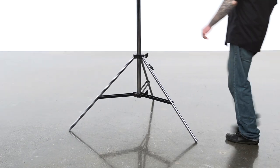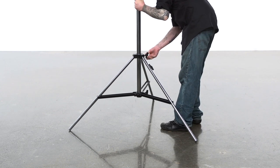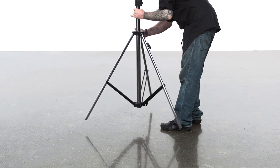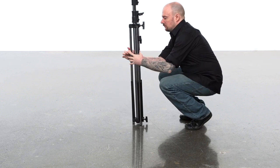To close the stand, reverse the process. Loosen the leg adjustment knob and bring the legs in until they are folded against the riser section. Watch your fingers.